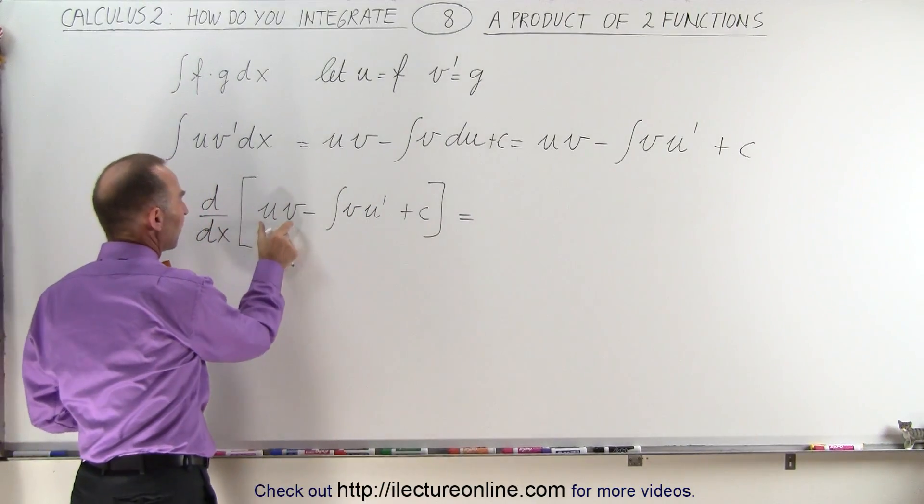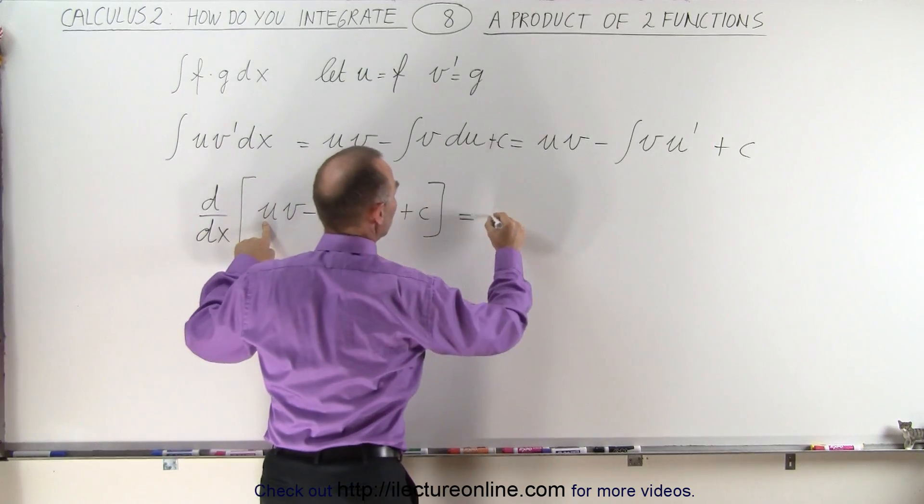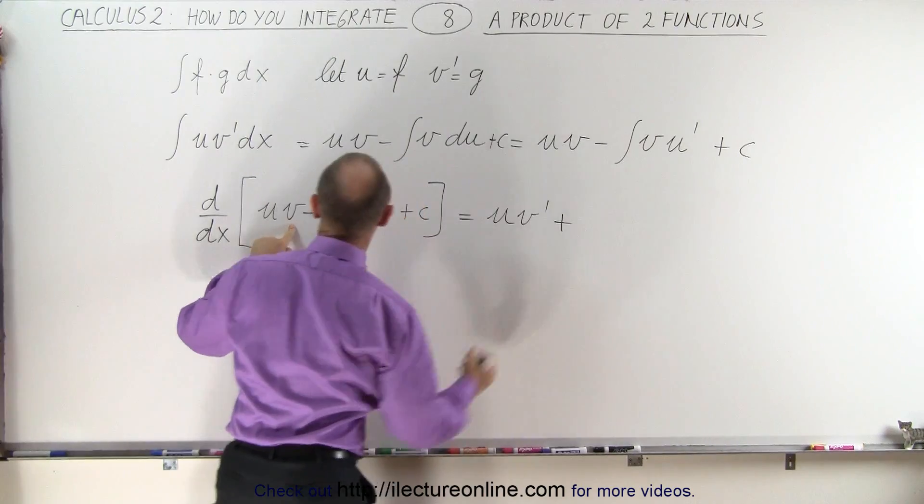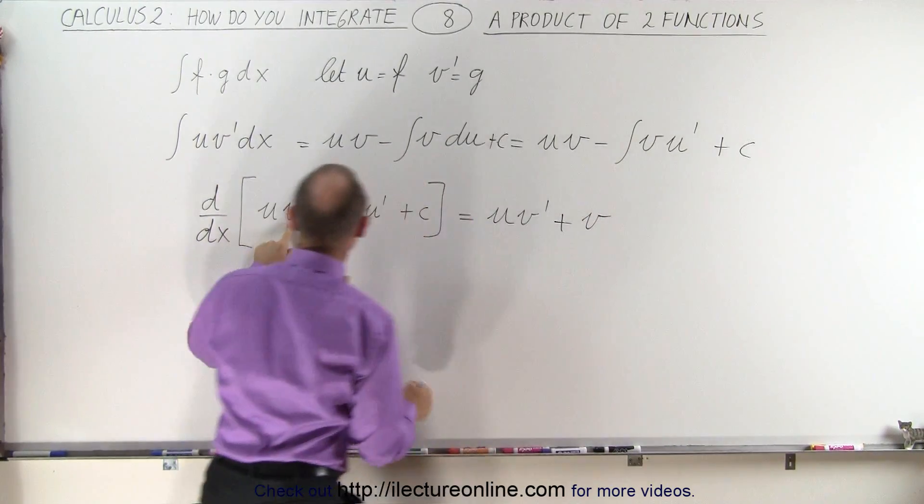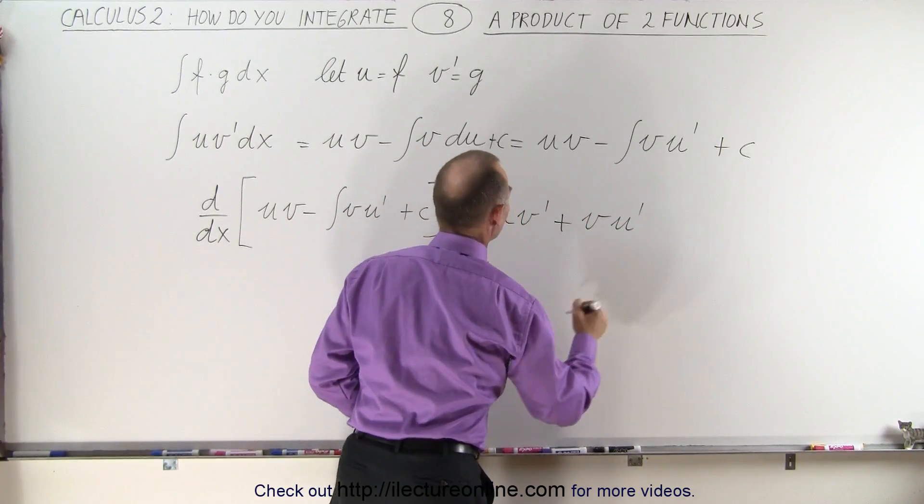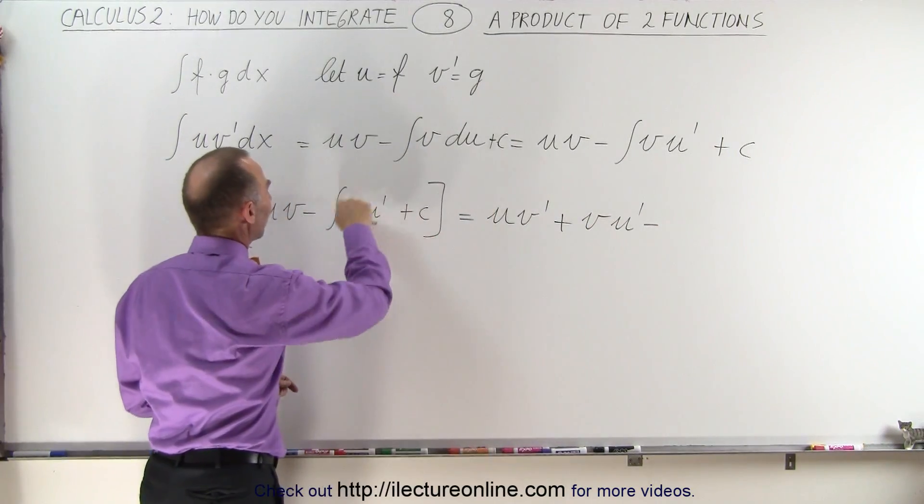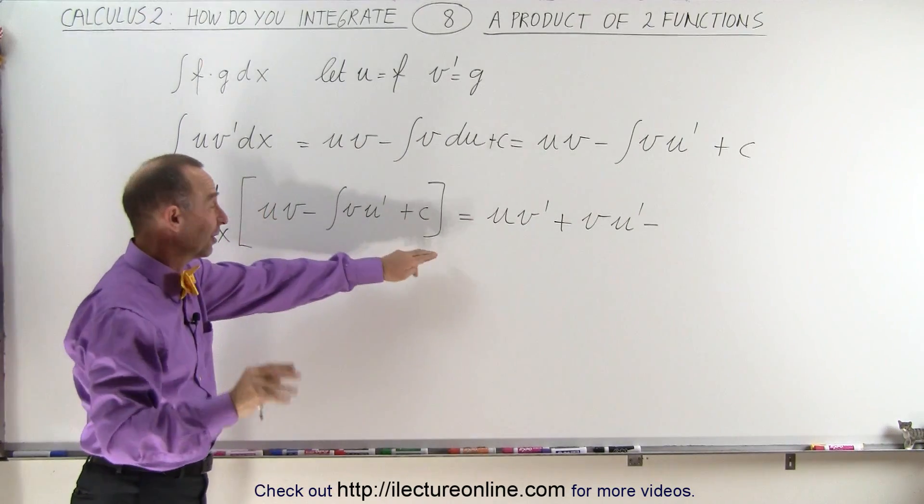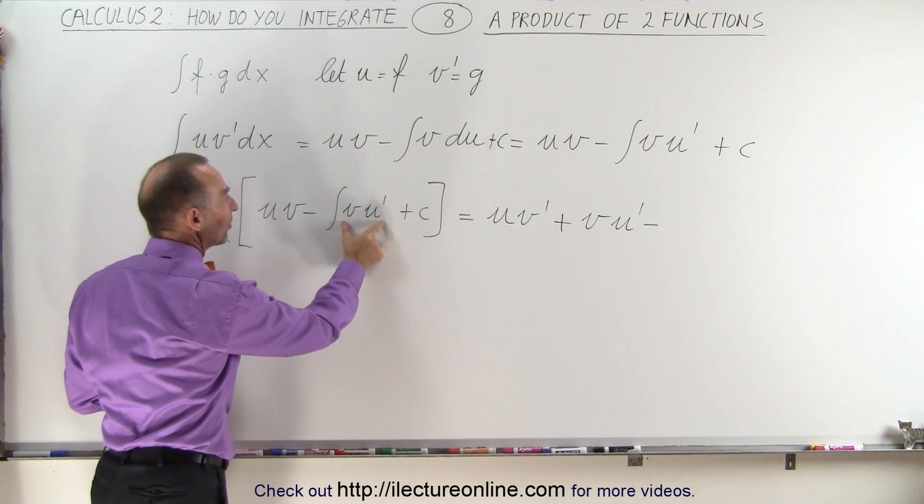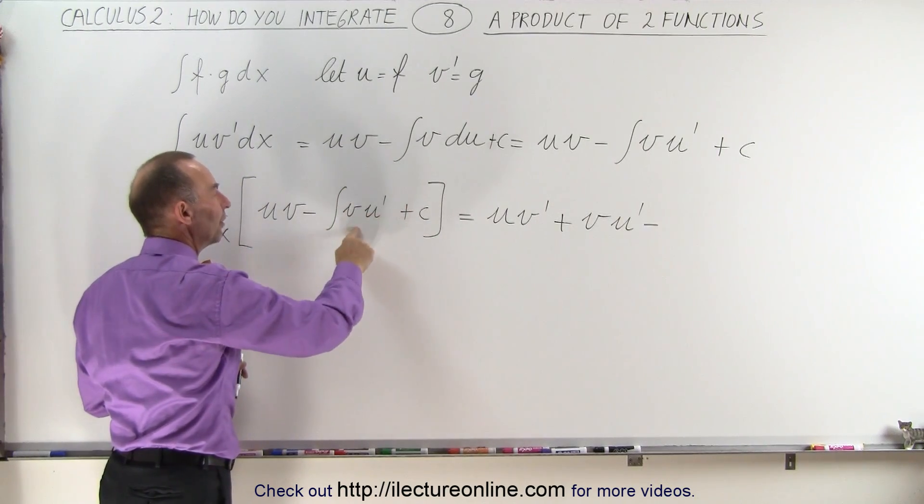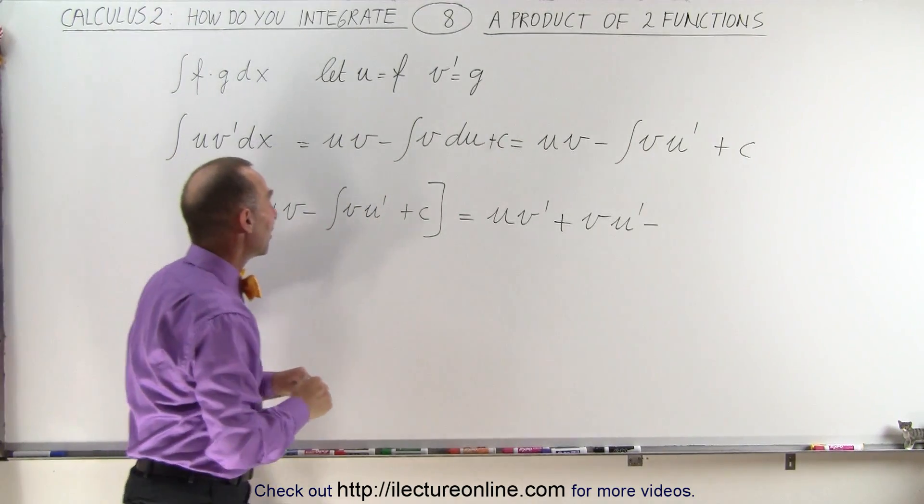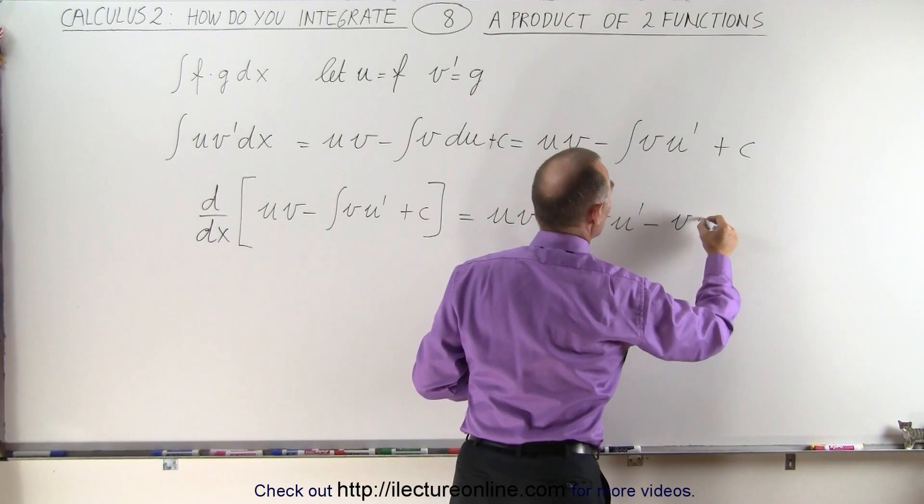So here we get derivative of a product. We take the first u times the derivative of the second which is v prime plus the second which is v times the derivative of the first which is u prime. Now we subtract from that the derivative of the integral. The derivative of an integral just gives back what's inside the integral because this is the anti-derivative. So taking the derivative of the anti-derivative the integral sign cancels out and we have simply v u prime.